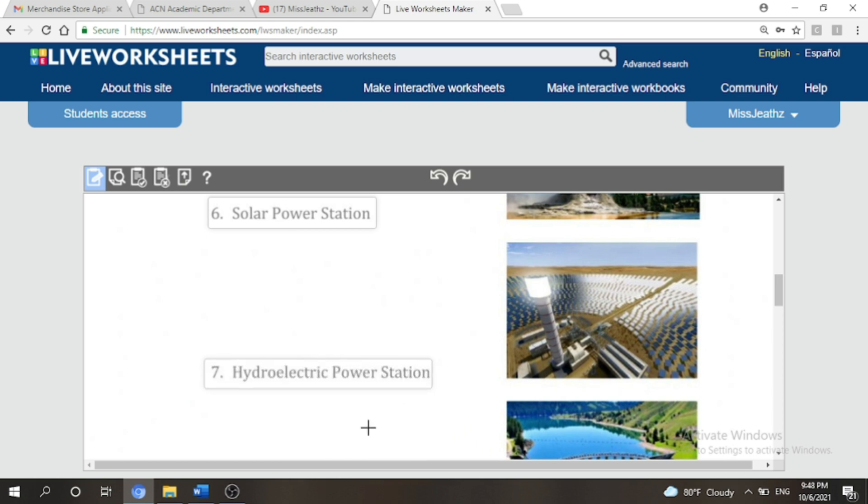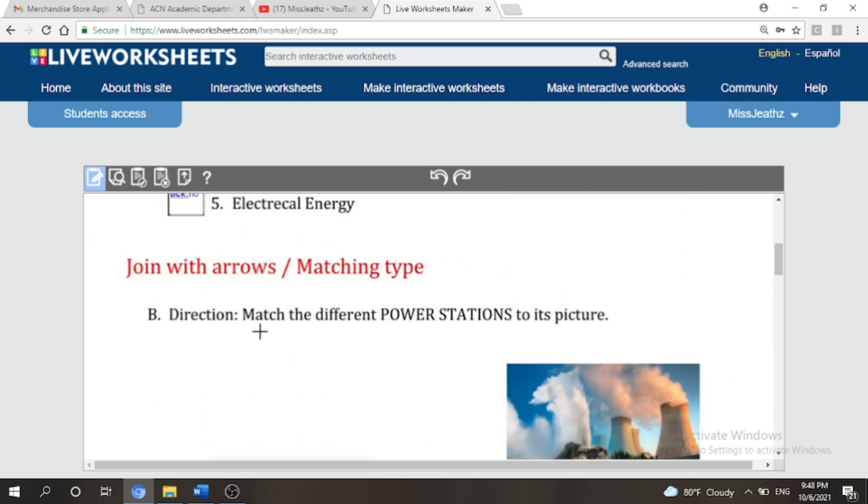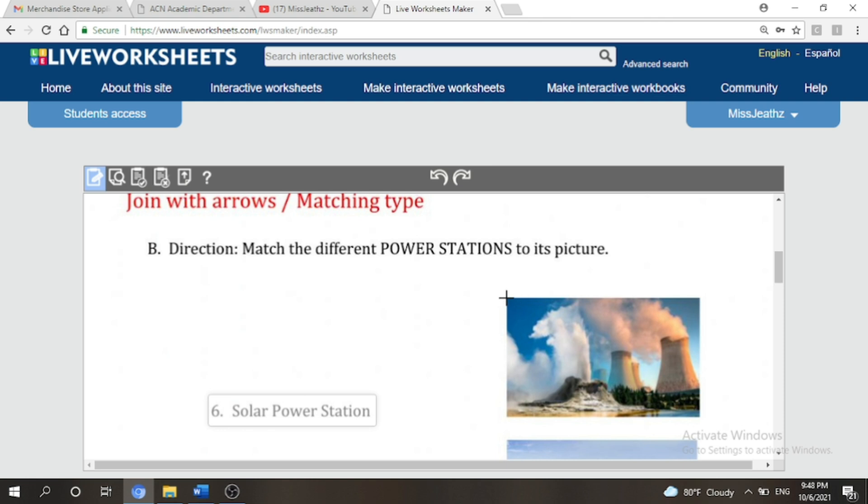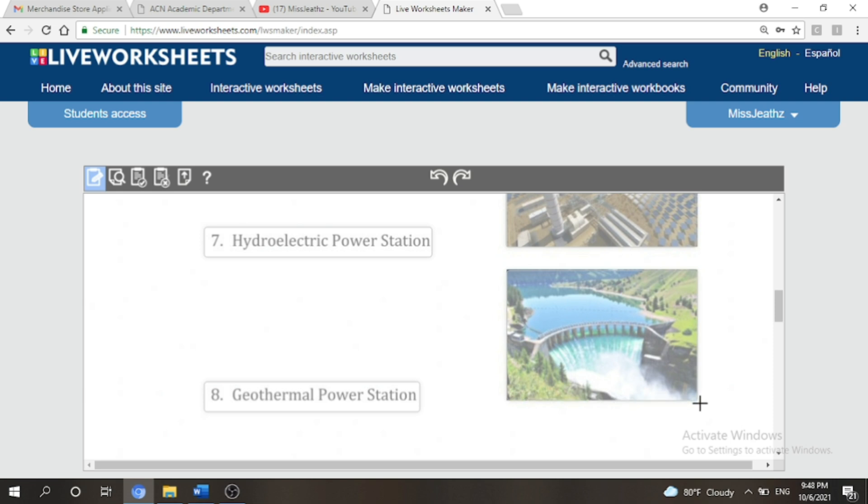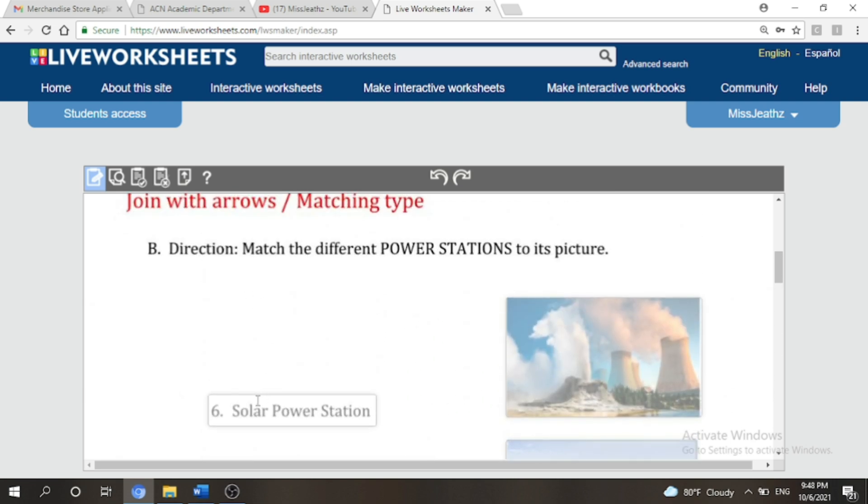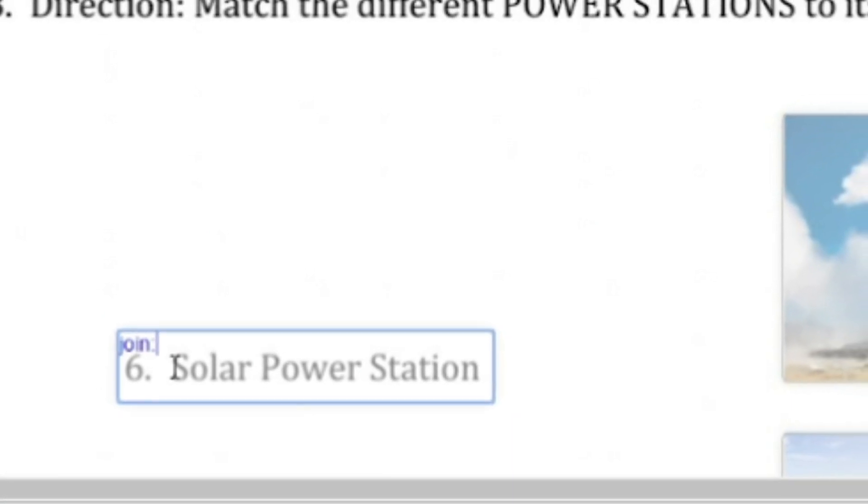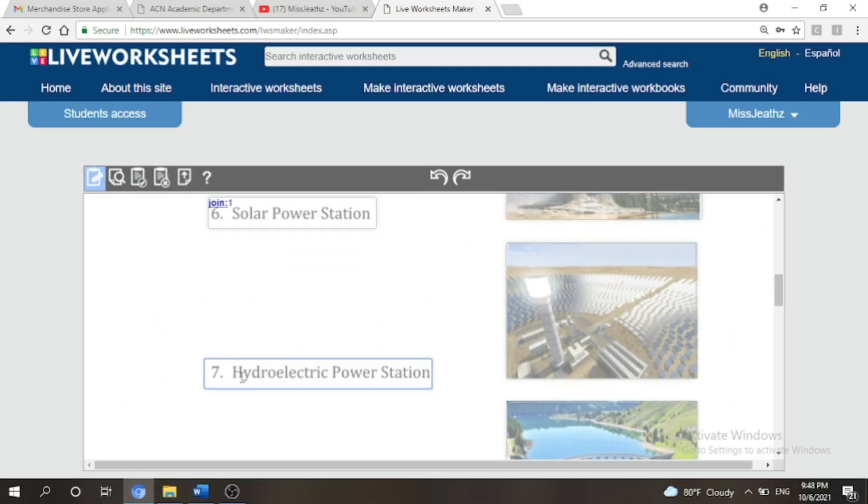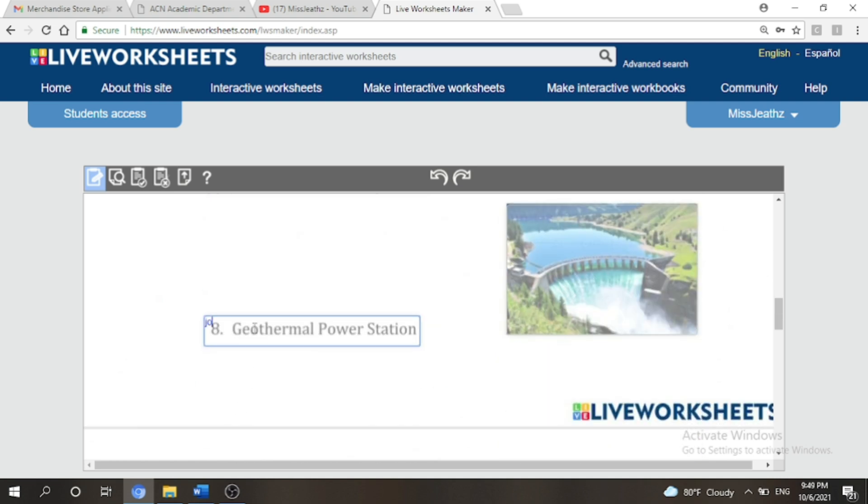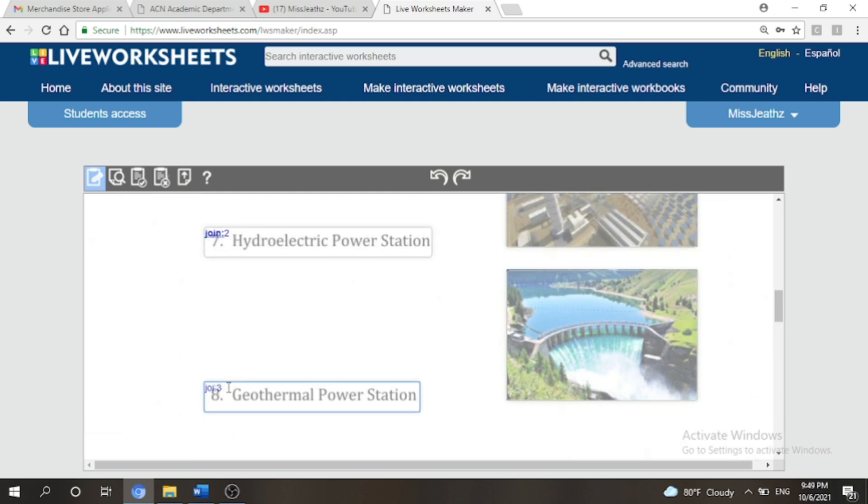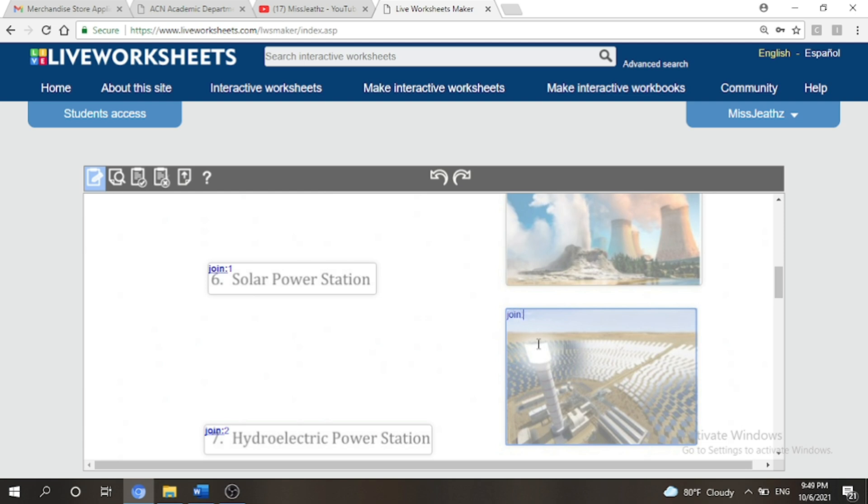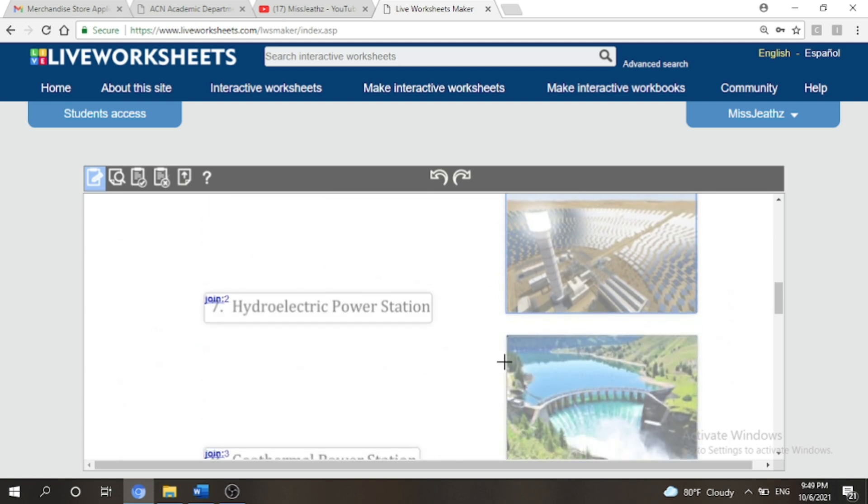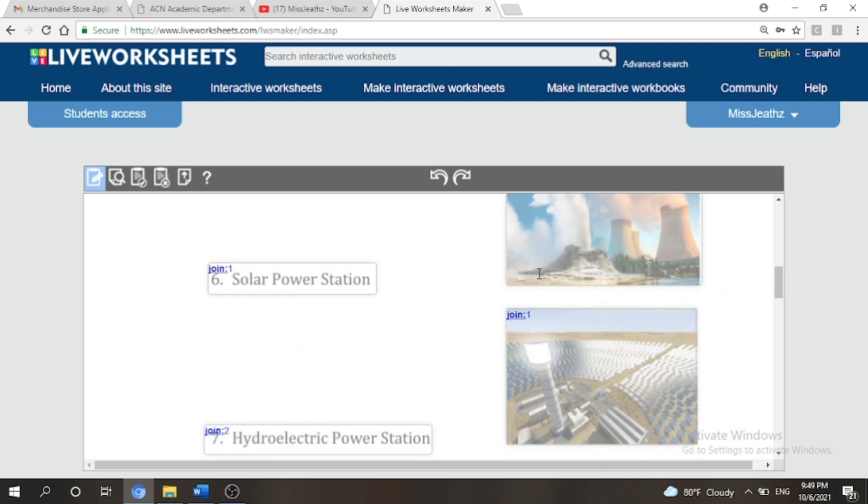So we're going to put boxes on the choices. As you can see in the direction, match the different power stations to each pictures. So we're going to make boxes over the pictures as well. And there you go. Now the command that we're going to use here is the word join colon followed by a number. So for example, we have here join number one, join two, join colon three. To match it to its correct answer, we just have to write the same command and the same number. For solar power station, that's join colon one. For hydroelectric power station, that's join colon two, and for geothermal power station, that's join colon three.